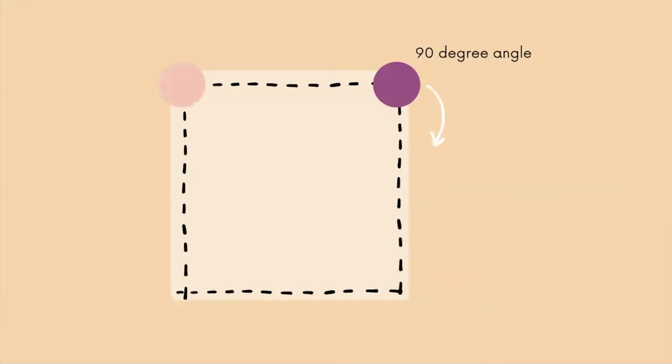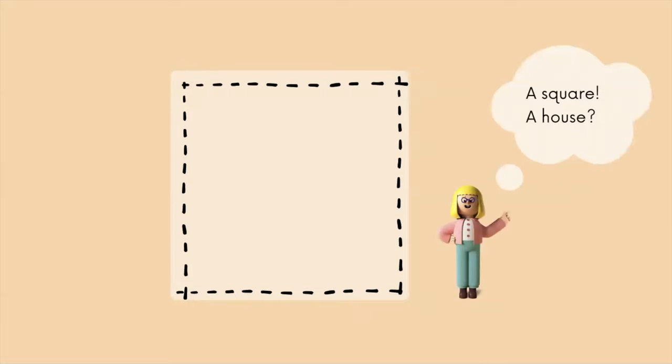For example, by programming a robot to perform 90 degree angles four times, children can better understand the formation of a square and start understanding the connection between geometry and squared objects and even houses.